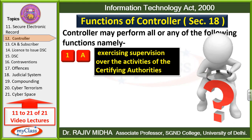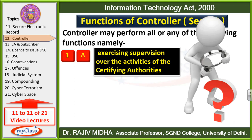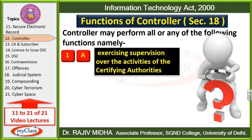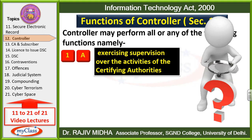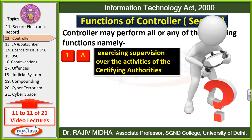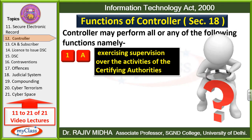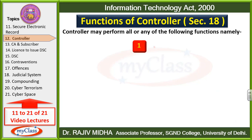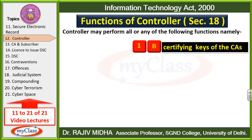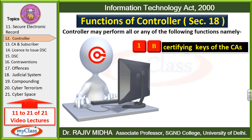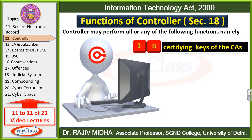Certifying authorities kis tarah se kaam kar rahi hain — controller unke activities par supervision rakheга. Second point: certifying the keys of the certifying authorities. Certifying authorities ko jo private and public keys di jaayengi taaki woh subscriber ko issue kar sakein, uska bhi saara control controller ke haath mein hai. He will certify the keys of the certifying authorities.